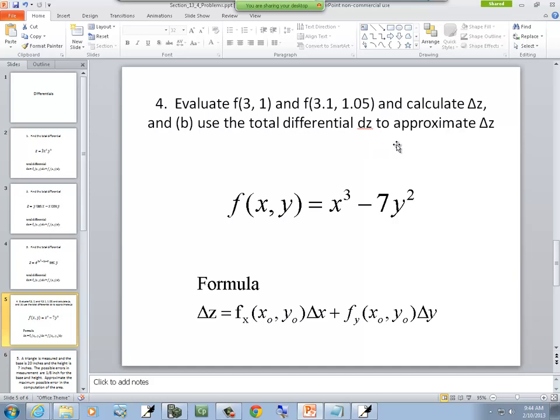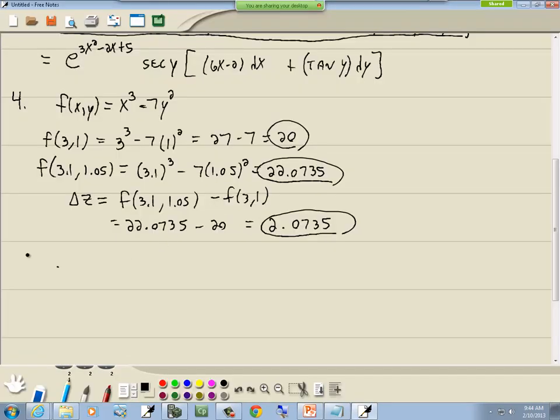Then it says use a total differential dz to approximate delta z. So instead of using algebra, we're going to use our calculus. So again, remember our calculus - we take partial of this with respect to x, which becomes 3x squared. The negative 7y squared drops away because we consider it a constant. Then we add on our dx plus, and then we take the partial with respect to y. The x to the third drops away and this becomes negative 14y, and we put on our dy.